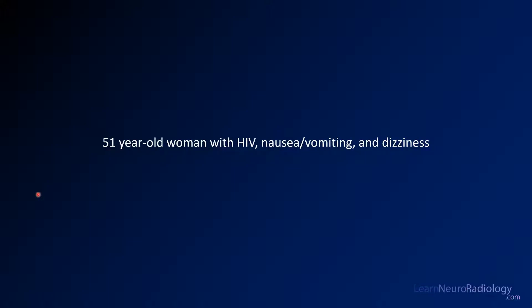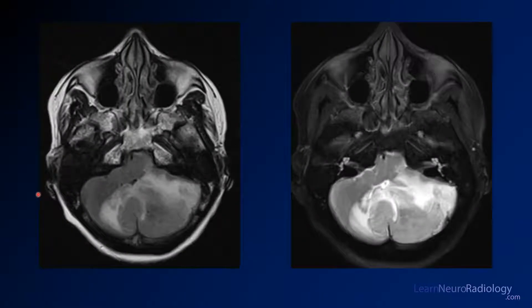We'll start with the case of a 51-year-old woman with HIV, nausea, vomiting, and dizziness. Here you have some MR images through the posterior fossa — a FLAIR on the left and a T2 on the right. You have this big expansile mass in the posterior fossa with a lot of surrounding edema and a lot of mass effect on the fourth ventricle, confirmed on T2.